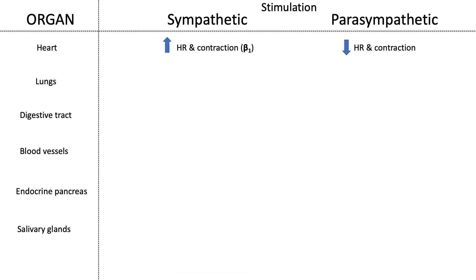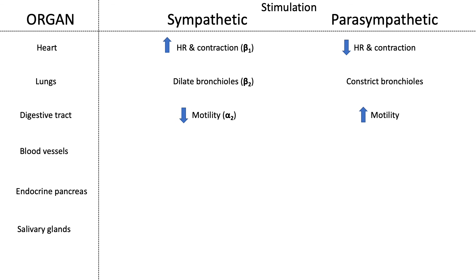For the heart: sympathetic fight-or-flight increases heart rate and contractile force via beta-1 receptors; parasympathetic decreases heart rate and contractile force. For the lungs: sympathetic causes bronchiole dilation via beta-2 receptors to maximize gas exchange; parasympathetic constricts bronchioles. For the digestive tract: sympathetic decreases motility via alpha-2 receptors on digestive organs; parasympathetic rest-and-digest increases motility.